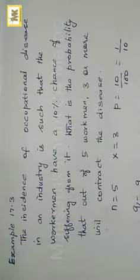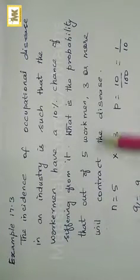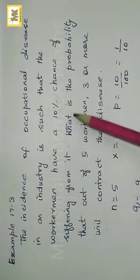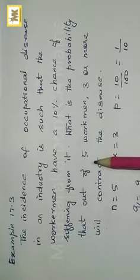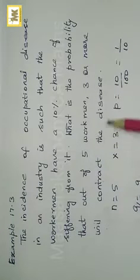Example 17.3: The incidence of occupational disease in an industry is such that the worker men have a 10% chance of suffering from it. What is the probability that out of 5, 3 or more will contract the disease?